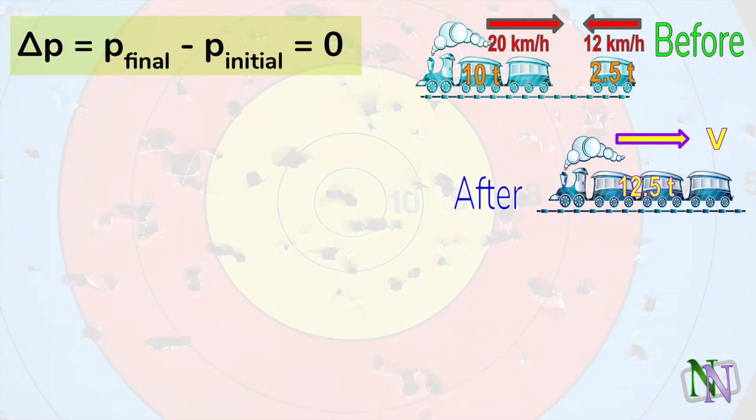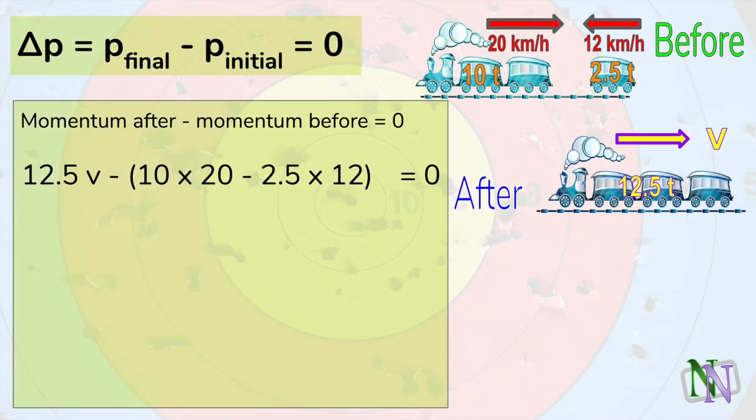We're going to use the principle of conservation of momentum here, but we'll show that the change delta p is zero. This is really the same method as making the momenta before and after equal to each other, but it's good to see this method too. The units are not SI, they're in tons and kilometers per hour, but we don't need to convert them to SI, because momentum is conserved in any units, and we're using the same units for mass and velocity all through the calculation. Here is the equation which includes V, which we don't know, and we subtract the initial momentum, and we know that the result is zero. There is no overall change in momentum.